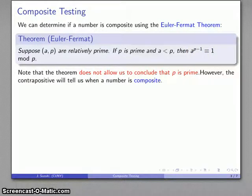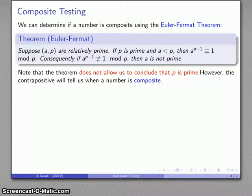On the other hand, if we take a look at the contrapositive of the theorem, it will tell us how we can determine whether a number is composite. If a to the p minus 1 is not congruent to 1 mod p, then p is not prime, it's a composite number.